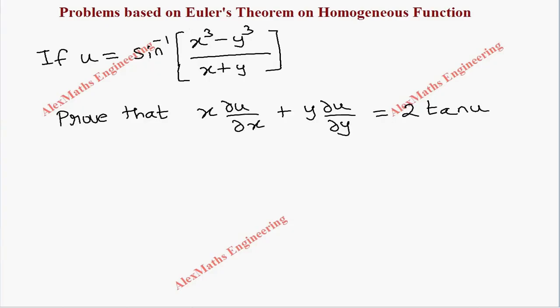Let's take this sine inverse to the other side, so it will become sin u. Now we have sin u equal to (x³ - y³) divided by (x + y).